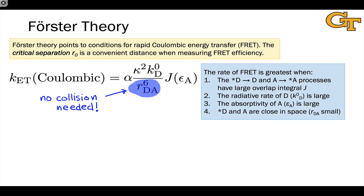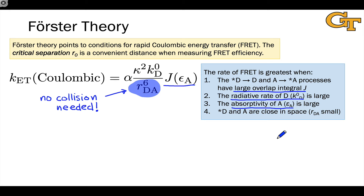From this equation, we can develop some qualitative ideas about when FRET is rapid. First, the rate of FRET is greatest when the spectral overlap integral J is large — large spectral overlap between the emission of the donor and absorption of the acceptor. This captures the idea that there is a large probability of energy transfer from D-star to A when the spectra overlap to a large degree. FRET is rapid when the radiative rate of D is large, associated with a large transition dipole moment. When the absorptivity of A is large, this plays into the spectral overlap integral as well — strong absorption of A indicates a high likelihood of being excited by D-star. And of course, the closer D-star and A are in space, the smaller R_DA is, and the larger the rate of energy transfer.